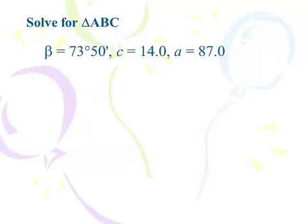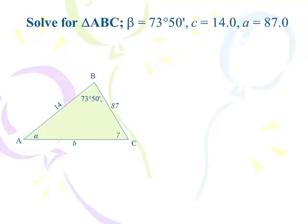All right, let's do another example. Solve for triangle ABC. β is 73 degrees 50 minutes. And we give you c and a there. So this is another side-angle-side problem. β is the angle that is between sides a and c. So there can be one and only one triangle. So I know it's rather boring, but I always do this. I always draw it out.